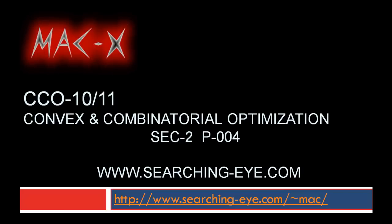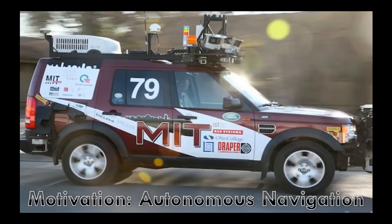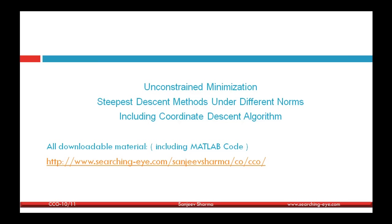Hello everyone, I am Sanjeev and welcome to the fourth presentation in section 2 of CISO 10.11. In this presentation I am going to discuss the algorithms for solving the unconstrained minimization problem, and the steepest descent methods under different norms: the L2 norm which results in the gradient descent algorithm, the quadratic norm which allows you to change the coordinate system for faster convergence, and the L1 norm which results in the coordinate descent algorithm.